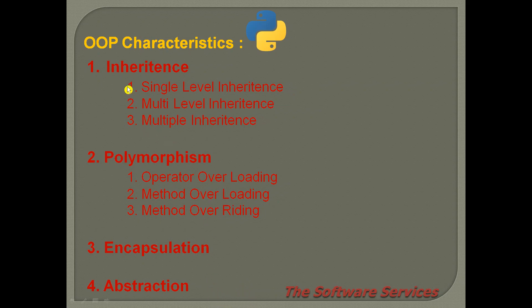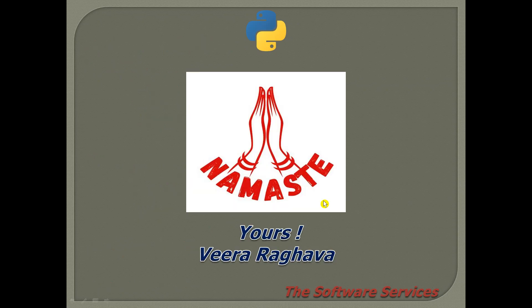So inheritance, polymorphism, encapsulation, and abstraction — these are the four mechanisms of object-oriented programming. Thank you for listening.